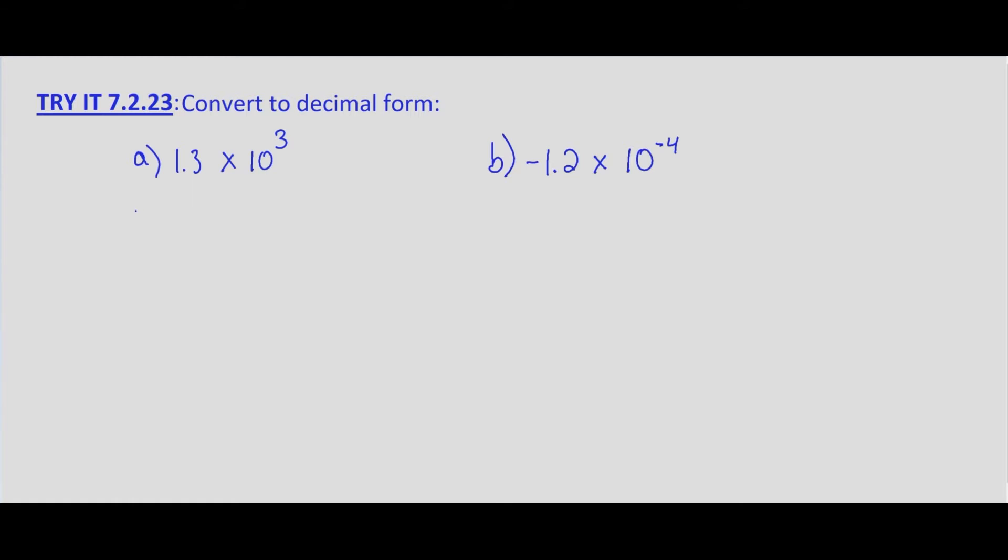So 1.3 times 10 cubed, 10 to the third power. That means we move our decimal place three places to the right. One, two, three. And then we just add zeros wherever there's an empty space. So this would be 1,300. And that's putting zeros in the two empty spaces.